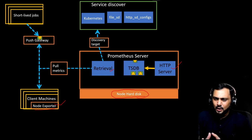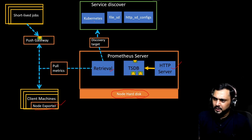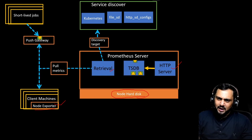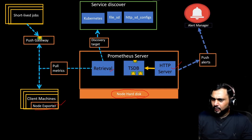Each service discovery method has its own configuration requirements and use cases. File-based discovery is simple and static, while HTTP service discovery is more dynamic and handles frequent changes in targets. Now we have enabled monitoring using Prometheus — we can pull metrics from node exporters, get data from push gateway, gather from Kubernetes via discovery, and also from files and HTTP servers. We also want to alert ourselves when things go wrong, so we create rules in the alert manager and Prometheus pushes notifications to it.